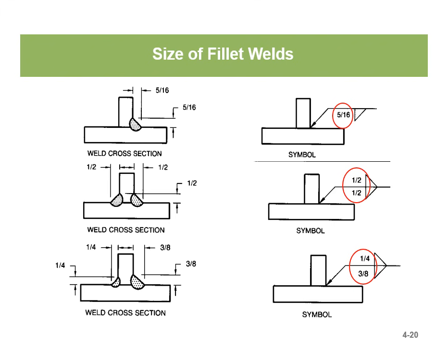Here's an example of fillet weld sizing. The size of the fillet weld goes directly to the left of the fillet weld symbol. For the top example, we want a 5/16 inch weld on the arrow side — both legs are 5/16 of an inch. The middle symbol is a half inch fillet weld on both sides — arrow and opposite — with all legs at half inch. The bottom symbol specifies a quarter inch weld on the opposite side and a 3/8 inch weld on the arrow side.